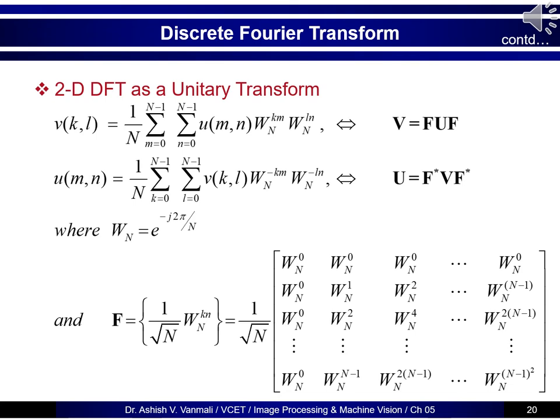Extending to the 2D case, the forward transform is: V of k,l equals 1 upon capital N, summation m from 0 to N minus 1, summation n from 0 to N minus 1, u of m,n times W_N raised to km times W_N raised to ln. In matrix form: matrix V equals F times U times F. The corresponding inverse equation is: u of m,n equals 1 upon N, summation k from 0 to N minus 1, summation l from 0 to N minus 1, V(k,l) times W_N raised to minus km times W_N raised to minus ln. In matrix form: U equals F conjugate times V times F conjugate.